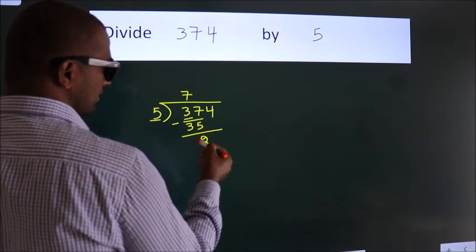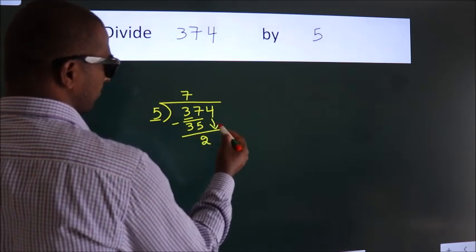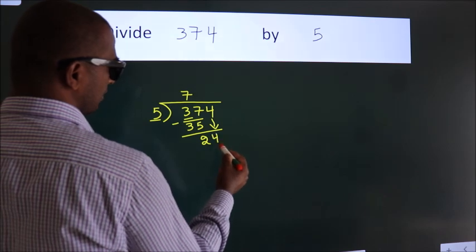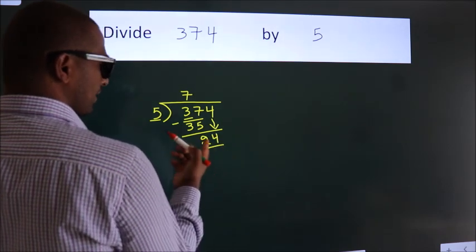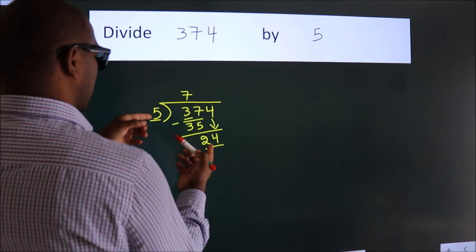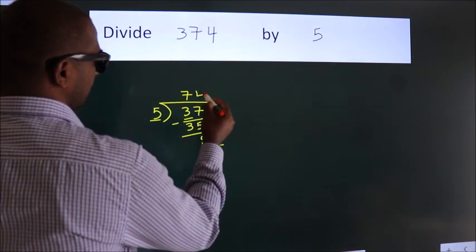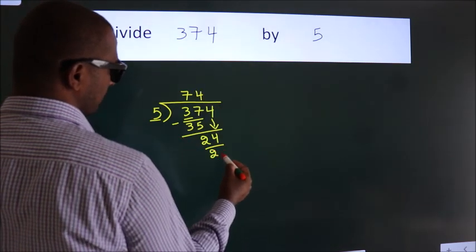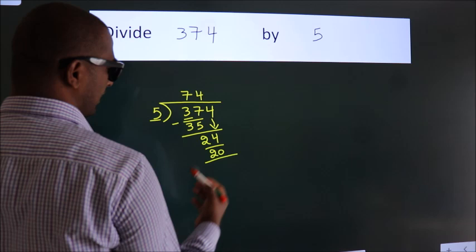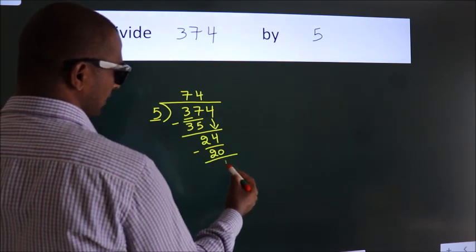After this, bring down the beside number. So 4 down. So 24. A number close to 24 in the 5 table is 5 times 4 equals 20. Now we subtract. We get 4.